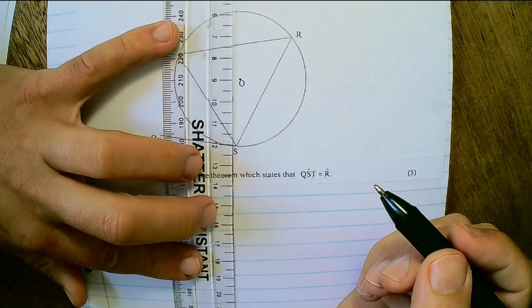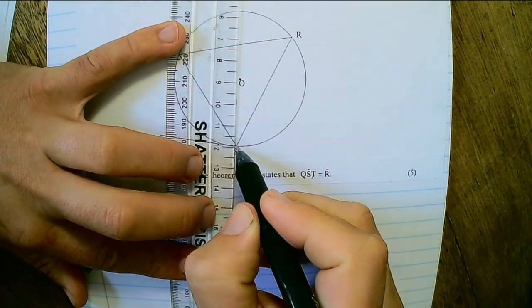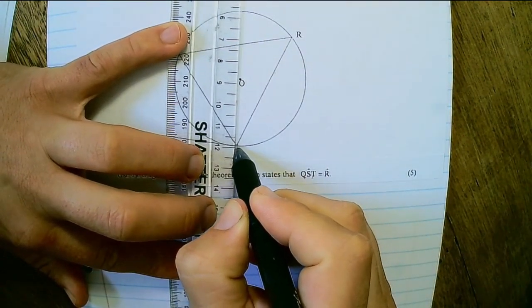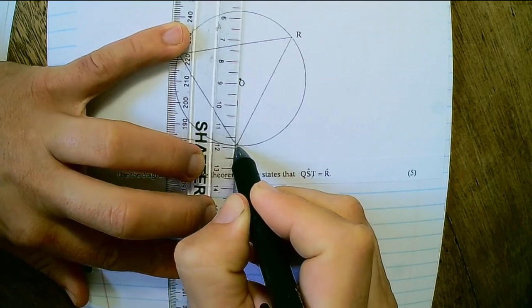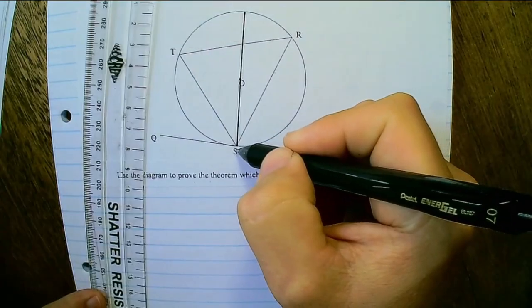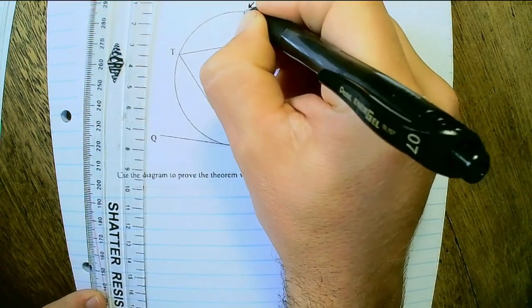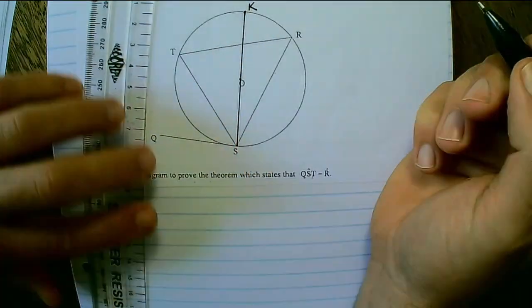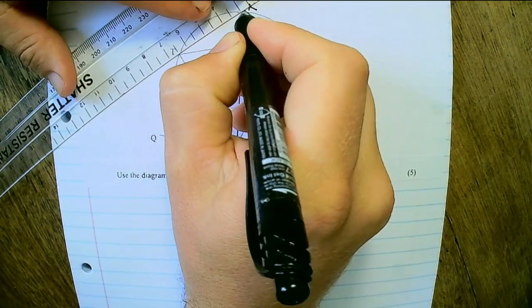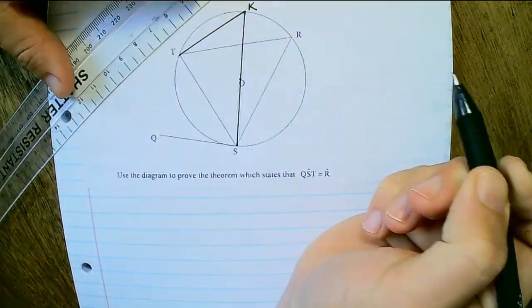So on my answer sheet, the first thing that I would do is I would make a construction. So I'll draw the line from S through the center and I'll draw it up until it meets the circle. I'll name that K or P.